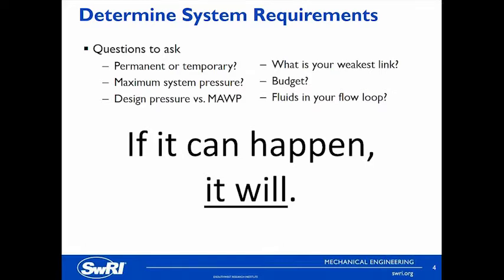The next question to ask is: what is your maximum system pressure? This is not really maximum allowable working pressure — there's a difference between design pressure and maximum allowable working pressure. You should design your system to comfortably operate at your design pressure. So if your weakest link in the setup is 2,000 PSI, then your design pressure shouldn't be 2,000 PSI — it should be something less, like 1,500 PSI. It's important to design to comfortably operate where you're going to be operating every day.